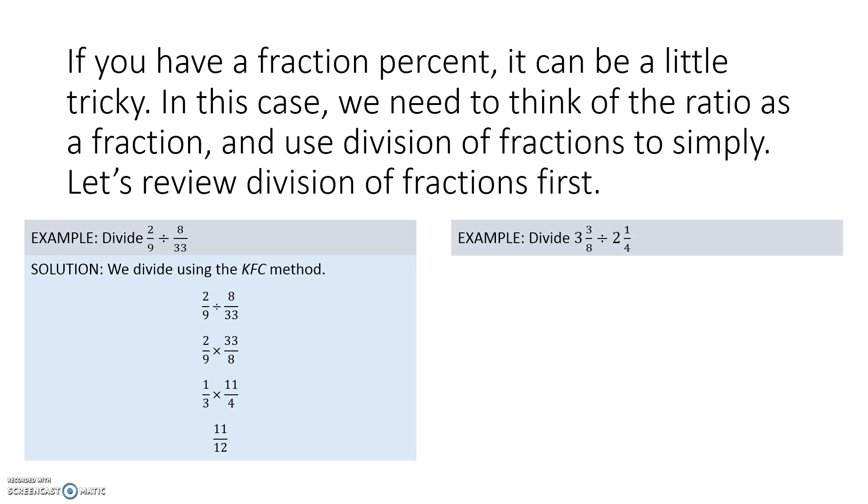Here's another example that involves mixed numbers. We do basically the same thing, but with mixed numbers we have to change them to improper fractions. Then we can apply KFC. So 3 3/8 is the same as 27/8, and 2 1/4 is the same as 9/4. KFC gives us 27/8 times 4/9. Check for any cross factors. We have a cross factor of 9 for the 27 and the 9, and we have a cross factor of 4 for the 4 and the 8. That gives us 3/2 times 1/1, which gives us a quotient of 3/2.